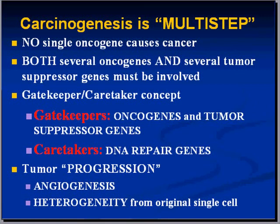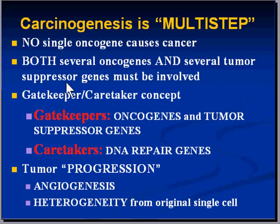Carcinogenesis is a multi-step process. We talked about a wide variety of genes mutating into oncogenes, causing growth processes to go unregulated and contributing to the development of tumor cells. But there is not one single oncogene which causes cancer. Even a severe mutation of any of the ones we discussed — if that was the only one present, it's not enough. In actuality, you probably need at least a couple of oncogenes, and a couple of tumor suppressor genes must also be involved, before you can really get the development of a tumor.